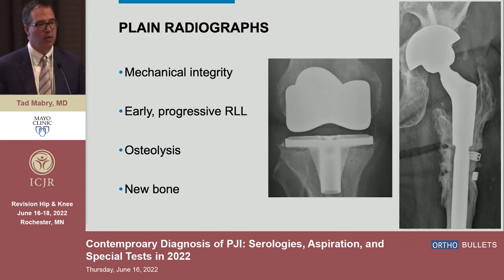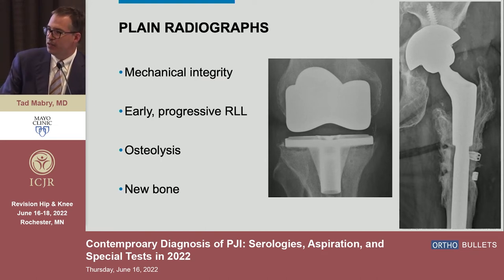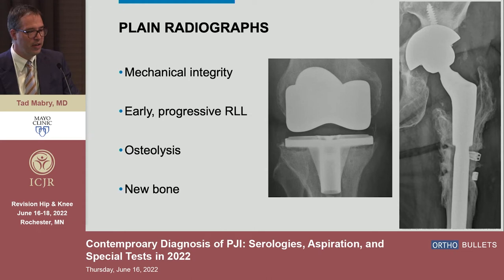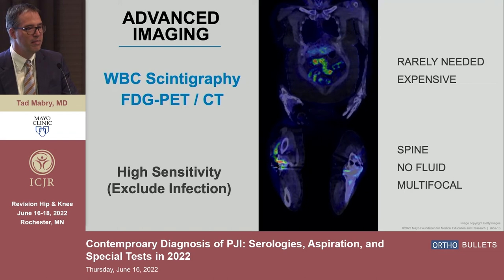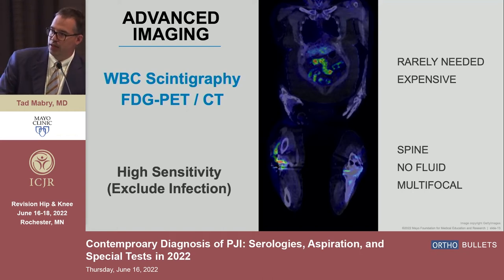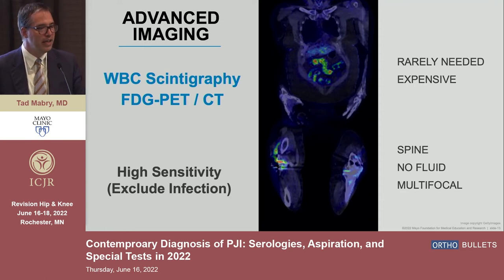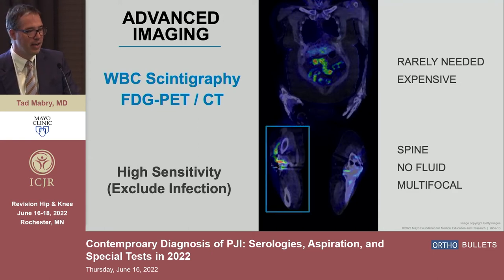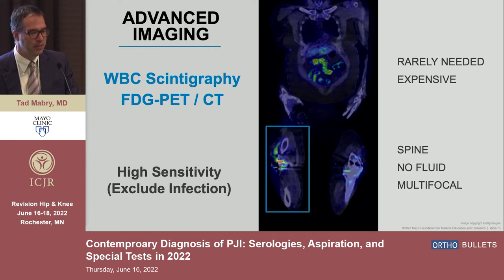On plain radiographs, you're looking at mechanical integrity and for early progressive radiolucent lines — for example, a total knee that's only been in for 14 months showing radiolucent lines under the tray should really get your attention. Also look for osteolysis or periosteal new bone formation, as seen in a patient with chronic infection. Advanced imaging is mostly white cell scintigraphy or FDG PET CT, which have high sensitivity — so the power of a negative test is greater than a positive. These are rarely needed expensive tests, typically used when looking for spine infection, when you can't get fluid, or in patients with multifocal infection.